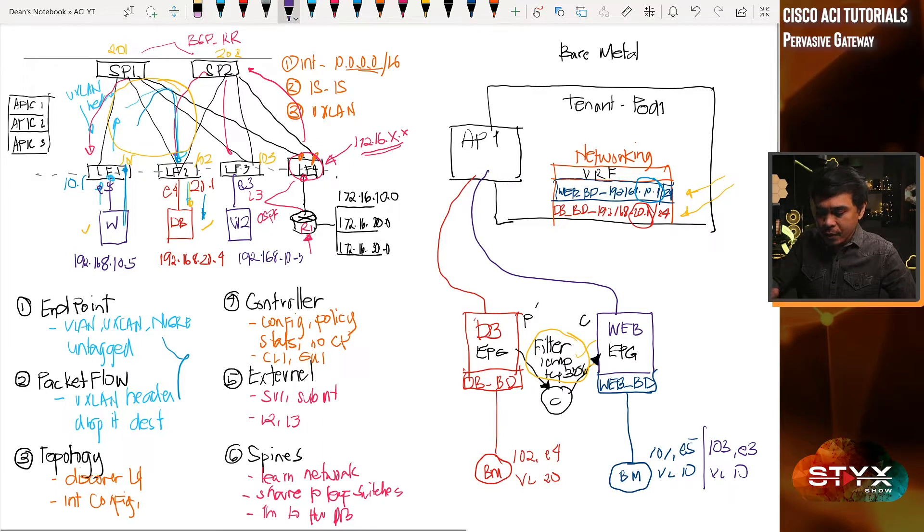What will happen here is since both servers are in the same EPG, not only that, they're also both in the same network 192.168.10.3 and 10.5, they can communicate directly to each other. And when I say communicate directly to each other, it doesn't need contract.